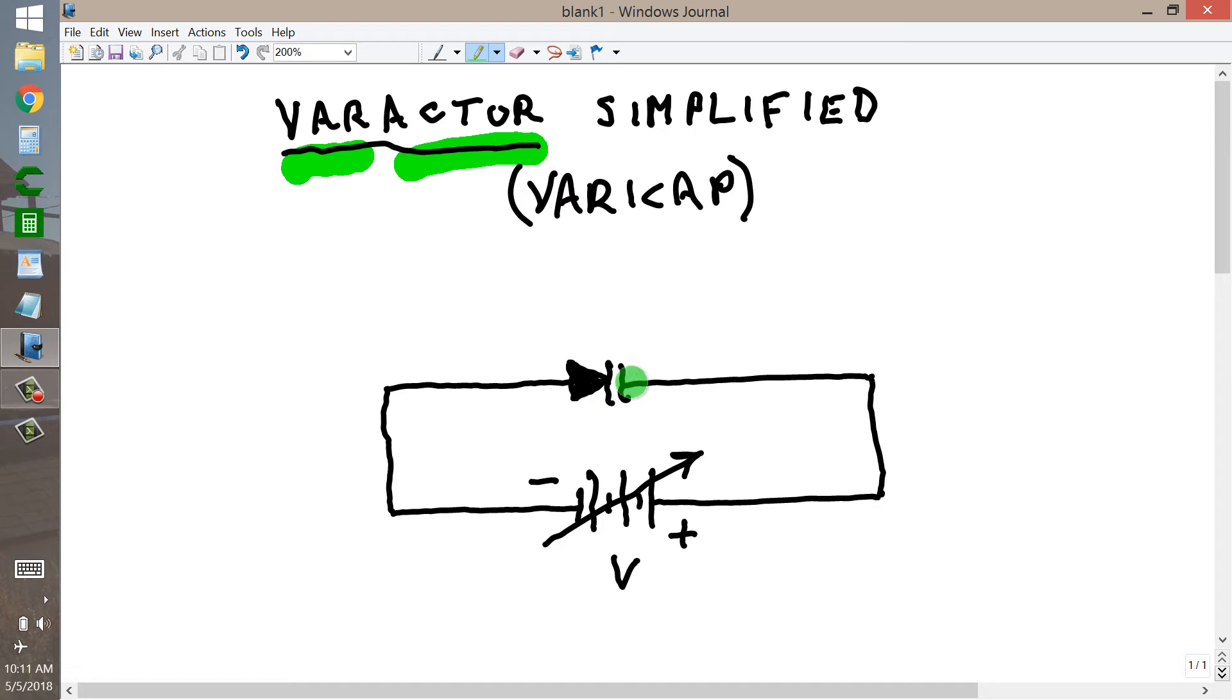Varactor diodes are specifically designed to exhibit a certain characteristic curve of capacitance versus applied reverse bias. Now, just in the simplistic sense like this, you are not going to get any use out of this thing.